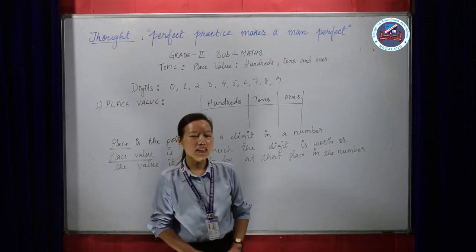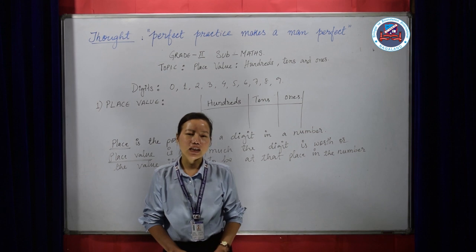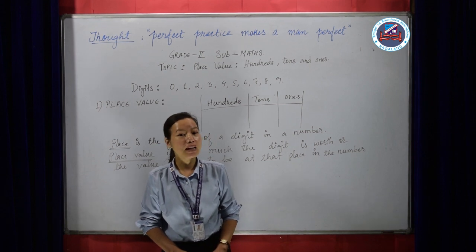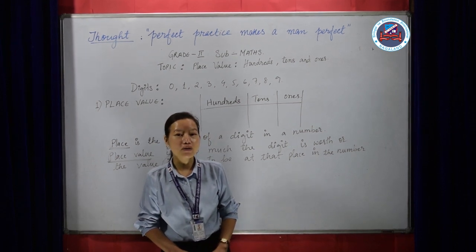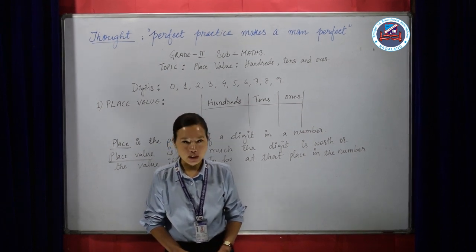So today's lesson is all about place value, that is of three places, that is 100s, 10s, and 1s.